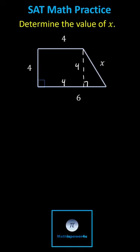The short leg of the right triangle is equal to six minus four, which is equal to two. And now we can use the Pythagorean theorem to determine x.